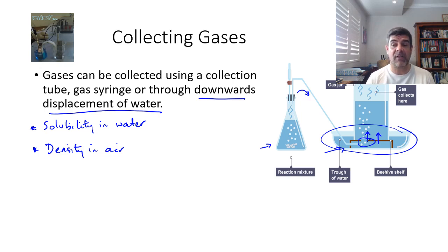So if you put something like a gas jar filled with water into the trough and then sit it just so it's sitting above or resting on top of the beehive shelf, then the gases that come out, some of them may dissolve in the water, but the rest of them hopefully will rise to the surface and actually displace this water.